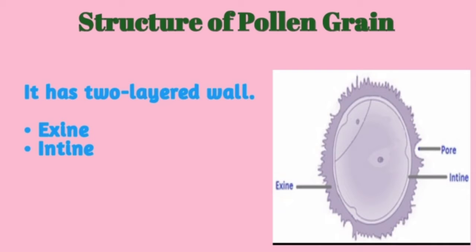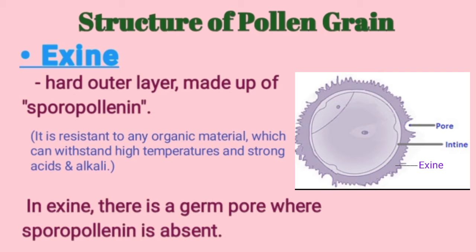The pollen grain has a two-layered wall, that is exine and intine. You can check the diagram where the layers of the pollen grain are shown. Exine is the hard outer layer made up of sporopollenin, which is a chemically inert polymer. It is resistant to organic material and can withstand high temperature and strong acids.